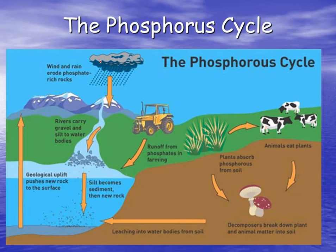This can be easily explained with the help of this picture. Here there are some mountains which have sedimentary rocks rich in phosphate content. During the process of weathering, some of the phosphates are eroded from these rocks and dissolve in the nearby soil. Half of this eroded phosphate gets dissolved in the river water and gets collected into the water body.